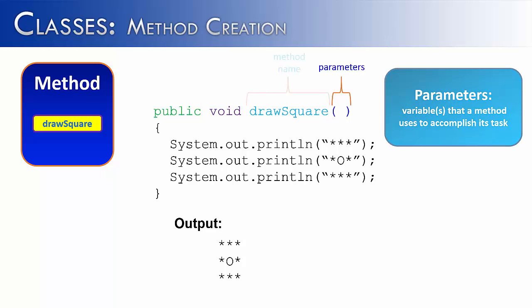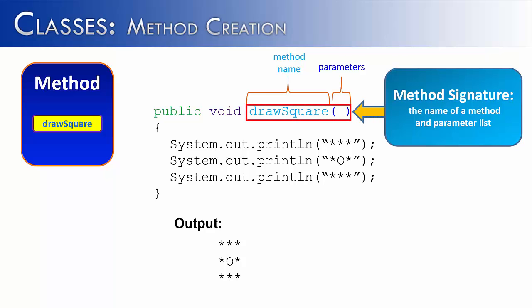If you combine the parameters and the method name, you get something called a signature. The method signature is the name of a method and its parameter list. It's often used to identify a method.